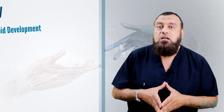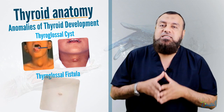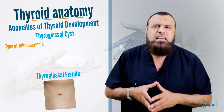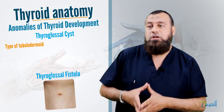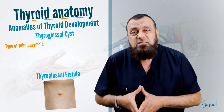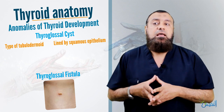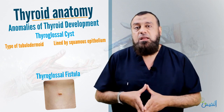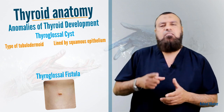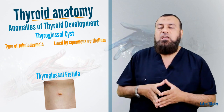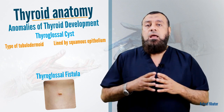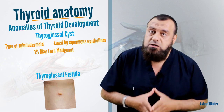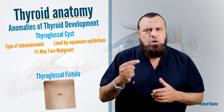The thyroglossal cyst and thyroglossal sinus or fistula are further anomalies of the thyroglossal duct. The thyroglossal cyst is a type of tubulodermoid — exactly like the branchial cyst — lined by squamous epithelium. It enters the differential diagnosis of midline neck swelling. Because it is lined by squamous epithelium, it may be liable for recurrent infection, which results in sinus or fistula formation. In one percent of cases, it may turn malignant, in the form of papillary thyroid carcinoma or squamous cell carcinoma.